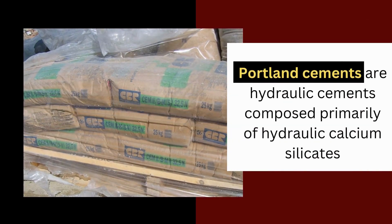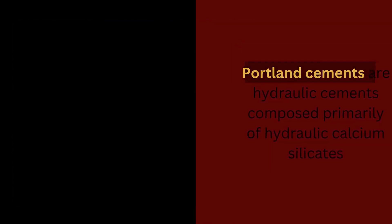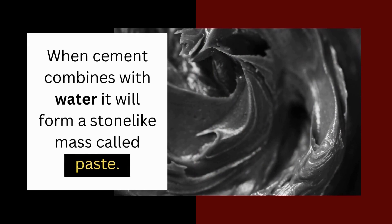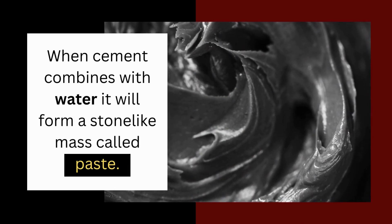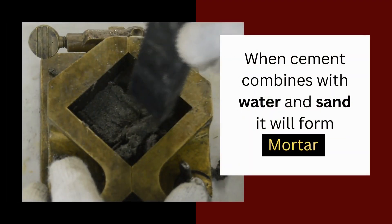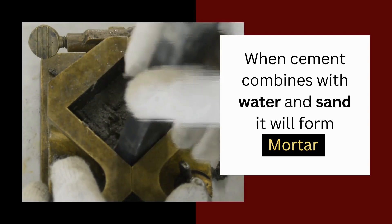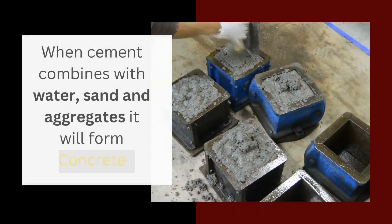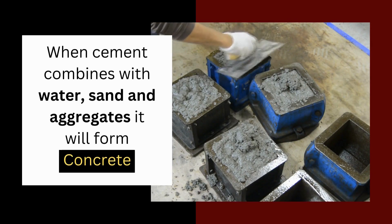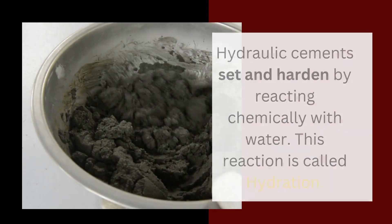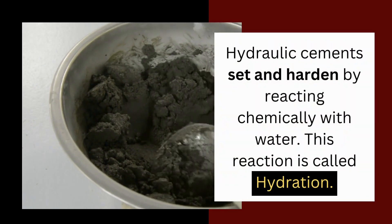Portland cements are hydraulic cements composed primarily of hydraulic calcium silicates. When cement combines with water it will form a stone-like mass called paste. When cement combines with water and sand it will form mortar. When cement combines with water, sand, and aggregates it will form concrete. Hydraulic cements set and harden by reacting chemically with water — this reaction is called hydration.